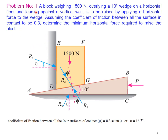Problem 1: A block weighing 1500 N overlies a 10-degree wedge on a horizontal floor and leans against a vertical wall. It is to be raised by applying a horizontal force to the wedge. Assuming the coefficient of friction between all surfaces in contact is 0.3, determine the minimum horizontal force required to raise the block.